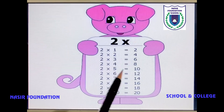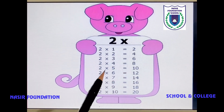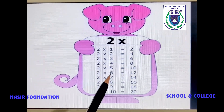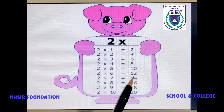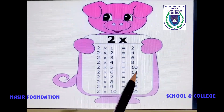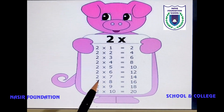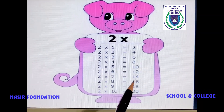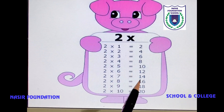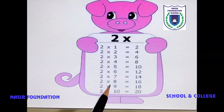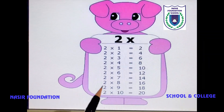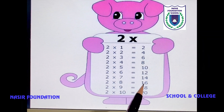2 fives are 10. 2 sixes are 12. 2 sevens are 14. 2 eights are 16.